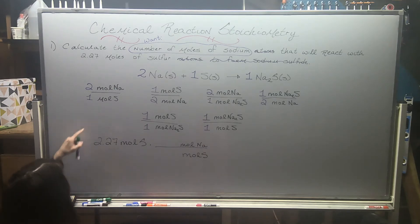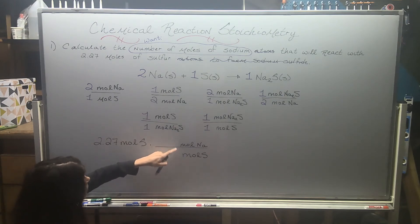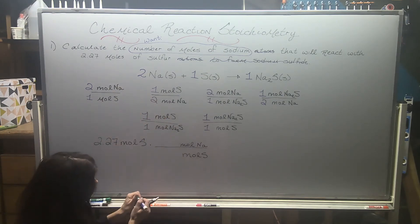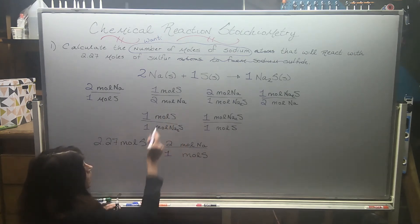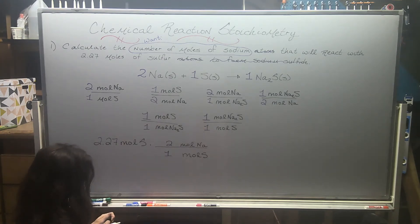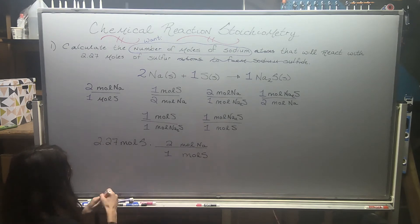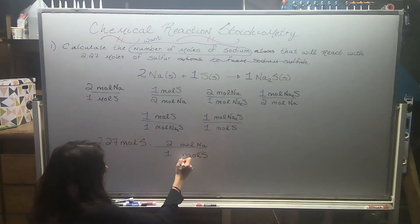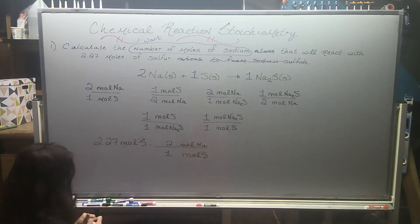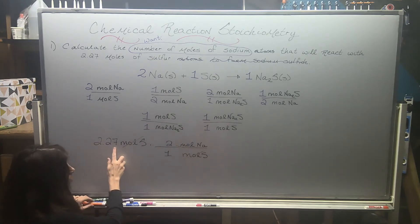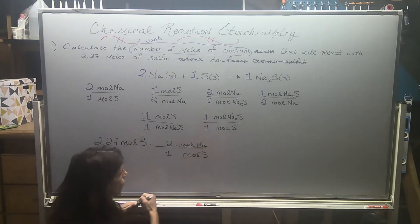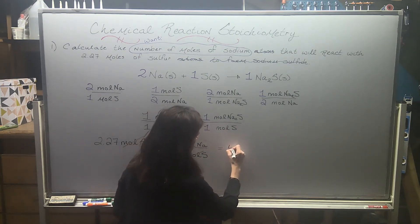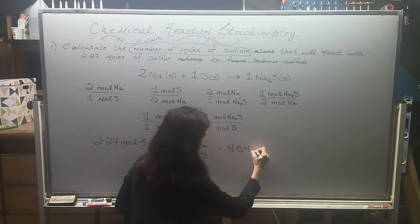We already wrote this conversion factor down — it was the first one. If I hadn't written it ahead of time, I'd go to my balanced equation: there's a two in front of sodium and a one in front of sulfur. Moles of sulfur cancels with moles of sulfur, and I'm left with moles of sodium. In my calculator I do 2.27 times 2 and I get 4.54 moles of sodium.